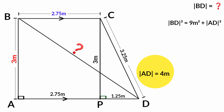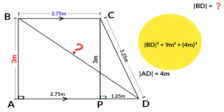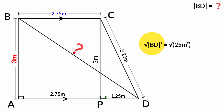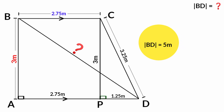Substituting into the equation: line BD squared equals 9 meters squared plus 4 meters squared. 4 meters squared is 16 meters squared, and 9 plus 16 equals 25 meters squared. Taking the square root of both sides, the square root of line BD squared is line BD, and the square root of 25 meters squared is 5 meters. So line BD equals 5 meters.